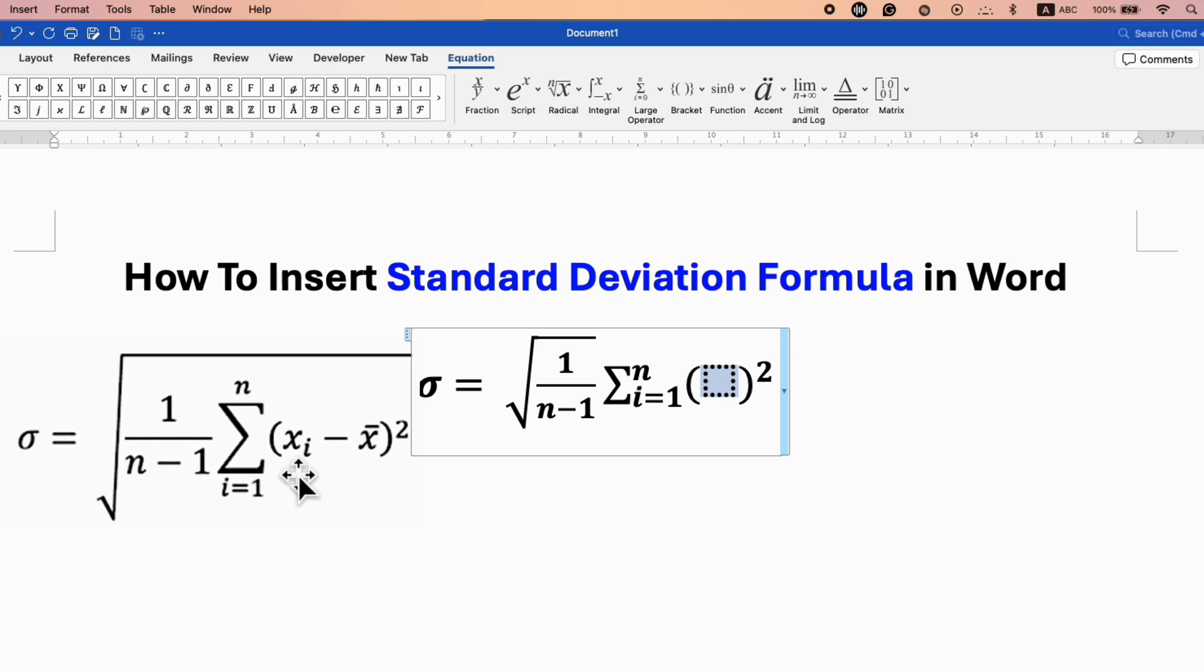Click inside the box. Now we need x_i with the i as a subscript. To insert it, go to the Script and select subscript. Now you can type x and i.